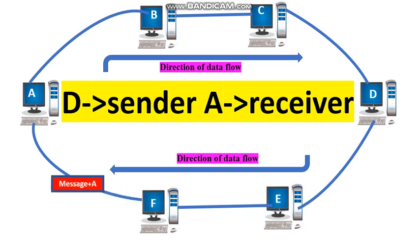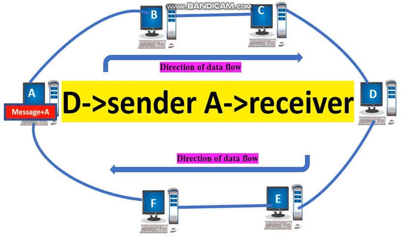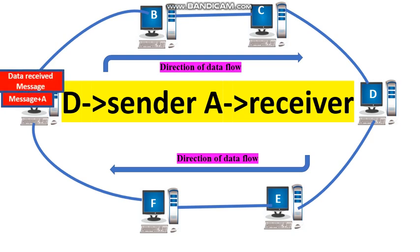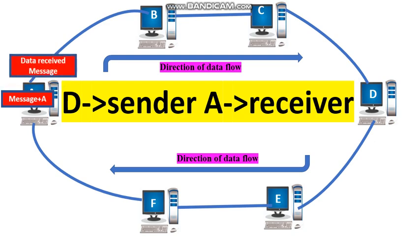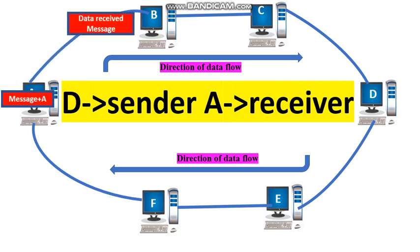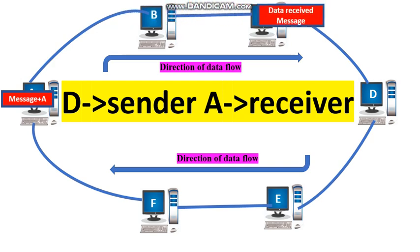When the token is received by the actual destination A, the destination node A copies the message data and adds a data receipt message to the token, and passes that data receipt message token to the next node. Finally, the source D receives the return token, verifies it, and empties the token.